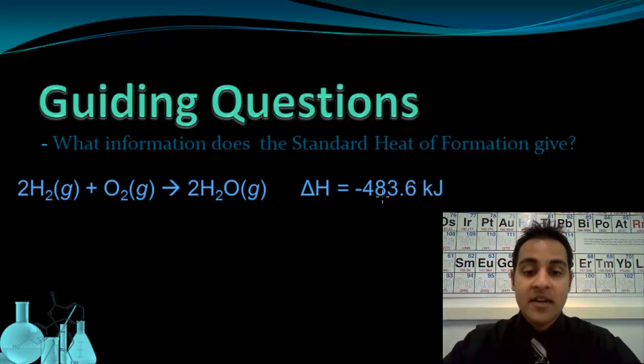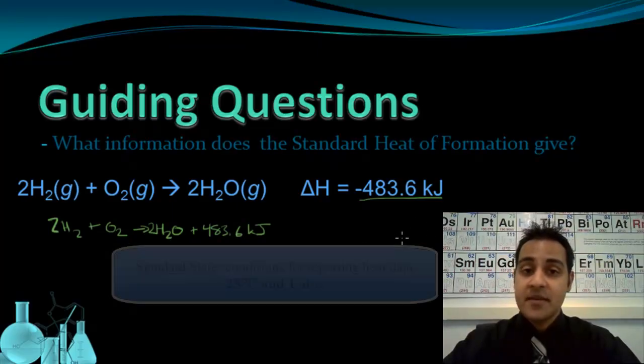We could also represent this writing heat as a product and making this a thermochemical equation like this. Now because the amount of heat released by a reaction or absorbed for endothermic depends on the temperature the reaction takes place at, this heat data is reported for specific conditions and those specific conditions are called the standard state.